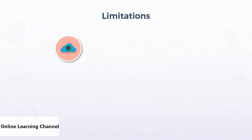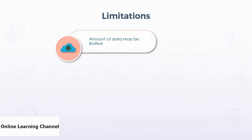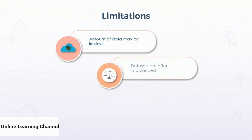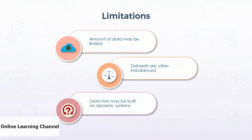Challenges encountered by operators implementing an anomaly detection system can be apparent at the outset. Most implementations are due to either a new system emerging that requires monitoring, or a system that has grown to an extent that monitoring manually is no longer feasible. In the case of the former, the amount of data available to train the model may be limited, causing frequent false positives until enough data becomes available. Data sets are also frequently imbalanced — either not enough outliers included, or too many, causing them to become expected behavior. Detectors built on rapidly growing dynamic systems may encounter issues identifying rapid changes as expected behavior.